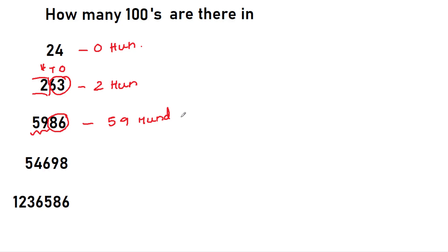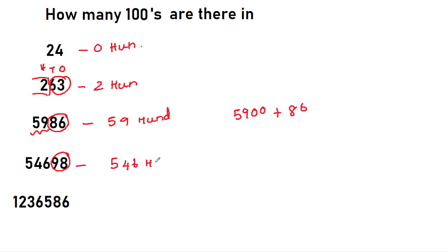What does 59 hundreds mean? It is 5,900. Out of 5,986, we can make 5,900, and we are having extra 86. With that 86, we can't make 100. So we can make 5,900 out of 5,986. Same way — try for this one. You just leave the last two digits and write: 54,600 hundreds. In the next case, leave the last two digits and what is left over is 12,365 hundreds. You can do this quickly if you understand the logic.